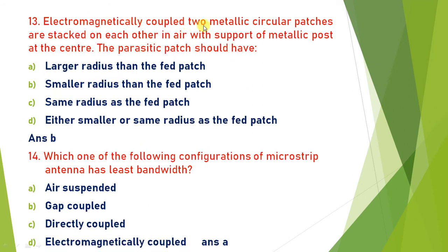Electromagnetically coupled two metallic circular patches are stacked on each other in air with support of a metallic post at the center. The parasitic patch has both length and radius less than the feed patch. So the answer is B.